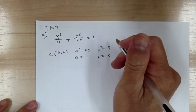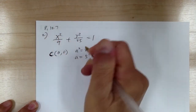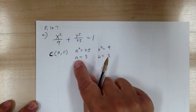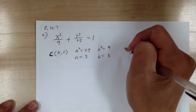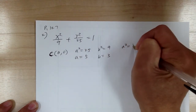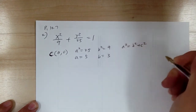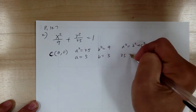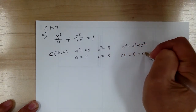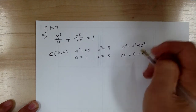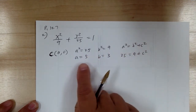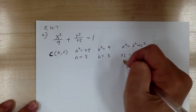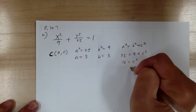You also need to find c. Now this is the capital C for center — now small c, you have to use the Pythagorean theorem. For this one, a is your biggest number. So a squared equals b squared plus c squared. So you've got 25 equal to 9 plus c squared. If you know your Pythagorean theorem, you should know there's going to be a 3-4-5 special triangle. So 16 equals c squared, so c equals 4.